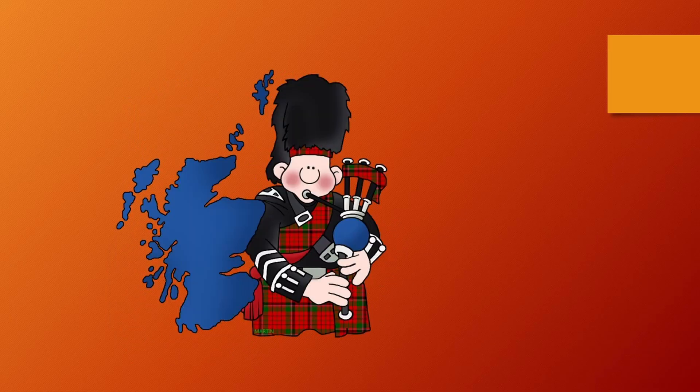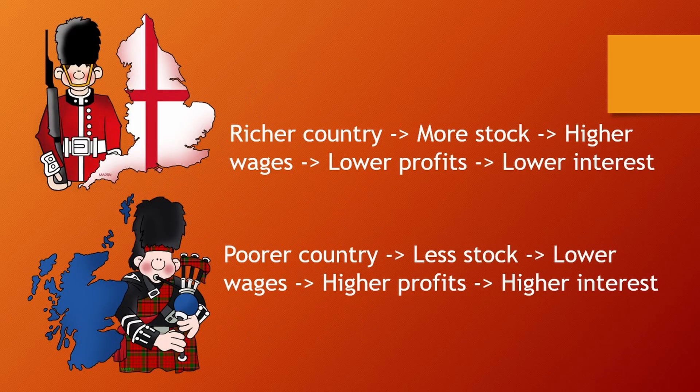He compares interest rates in England and Scotland. The market rate of interest was higher in Scotland. Although England was a richer country, stock had a higher profit in Scotland. Since Scotland had less stock than England, it had fewer opportunities for employment, which meant greater competition between workers for jobs, keeping wages low and profits high.